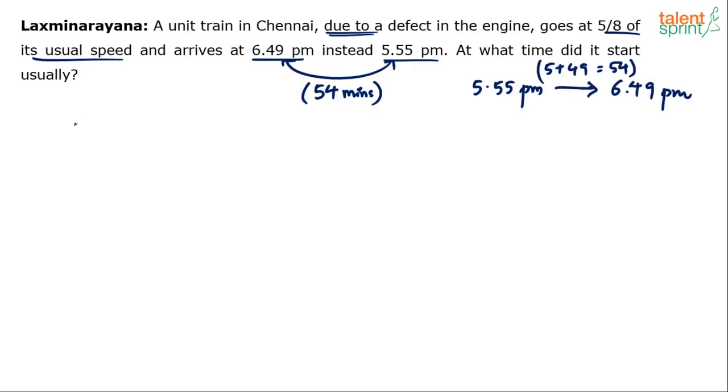See, the distance covered is same in both the cases. The distance is same from Chennai whichever destination. Only thing is there are two different cases. Distance is speed into time, so let me say S₁ × T₁ and S₂ × T₂. Case 1 speed and time, case 2 speed and time.